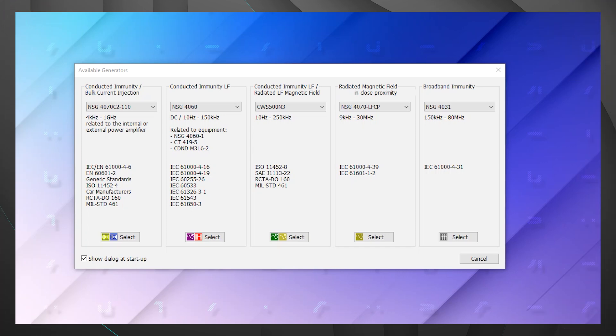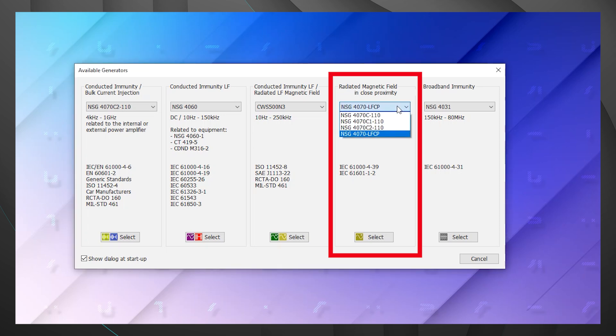Here you're going to find the starting display for the ICD.Control software. You can see there are a few options here. What we're interested in today is the radiated magnetic field testing in close proximity, which is going to be the fourth option. You can see right now there's the NSG 4070 LFCP selected. We're going to hit that drop down and go to the NSG 4070 C2-110. Now let's hit select.